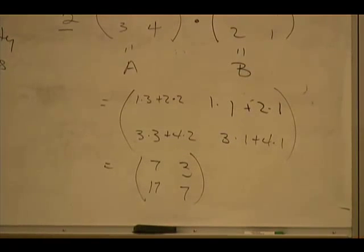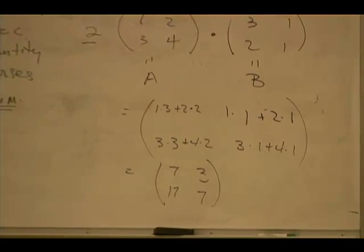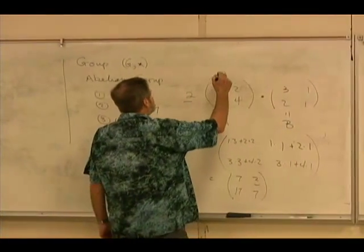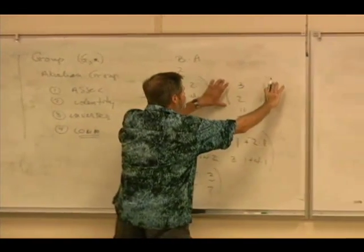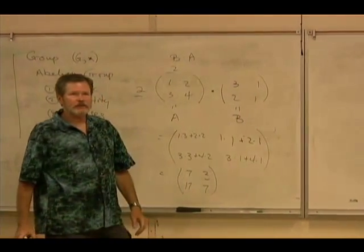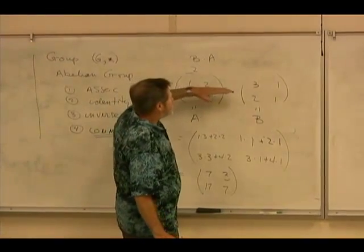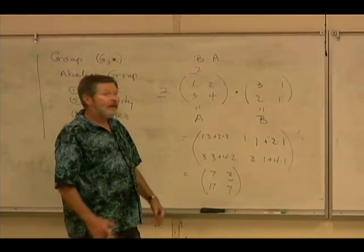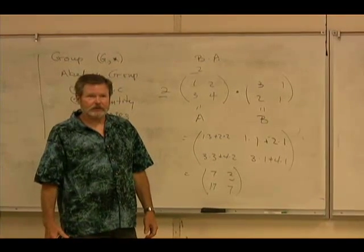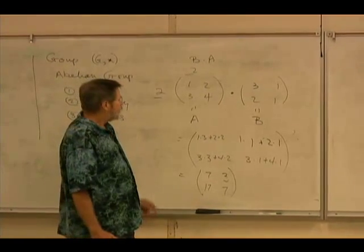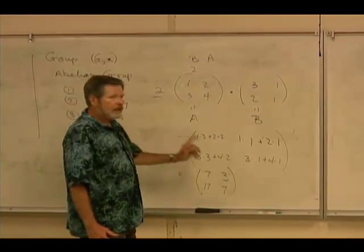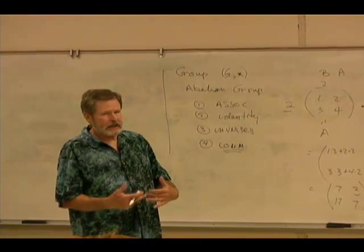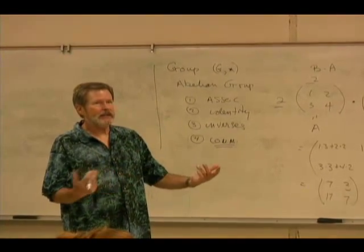I could call this matrix A and come up with a second 2 by 2 matrix B. If I reverse the order and write B times A versus A times B, I take a row from this matrix and a column from this one when I multiply them together. That is rarely the same thing if you reverse the order. Hence, it is almost never the case that A times B equals B times A. This is an example of a binary operation where multiplication does not commute.